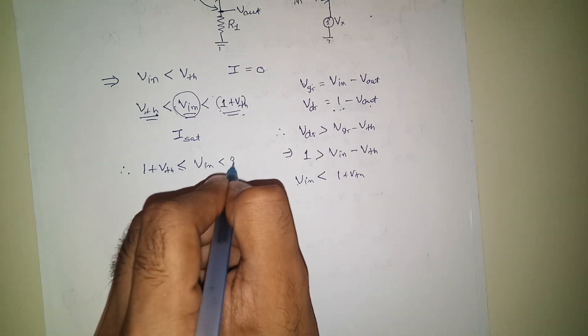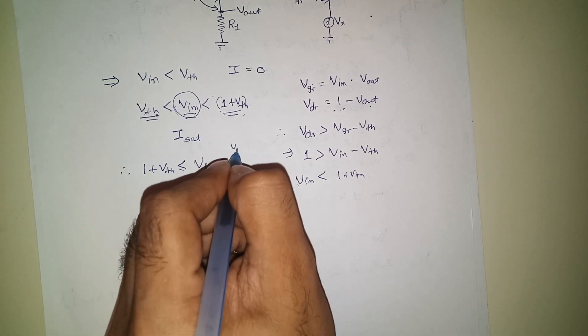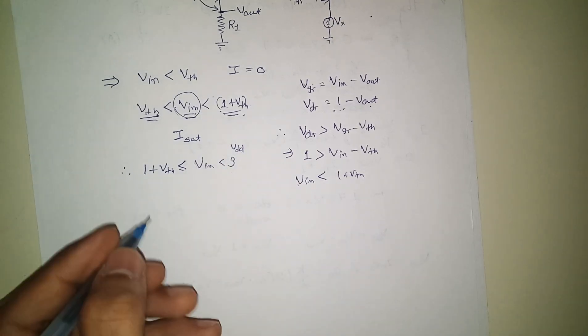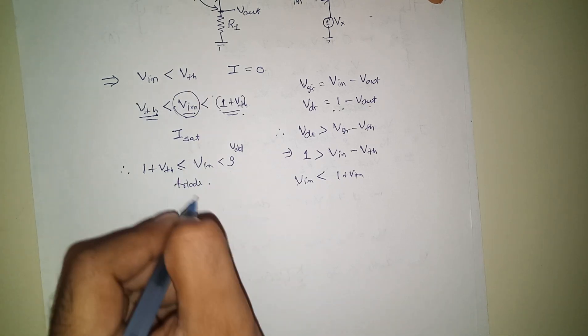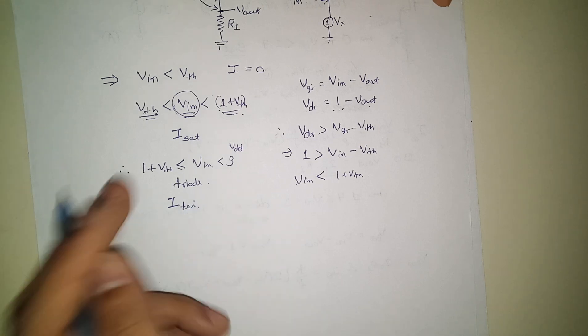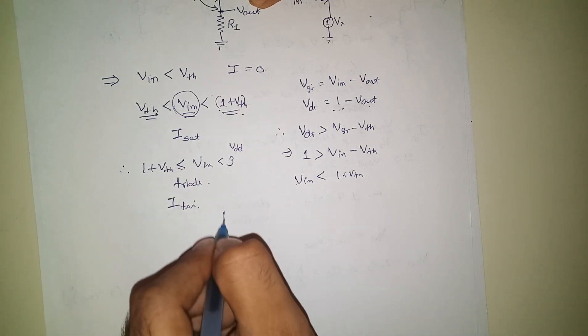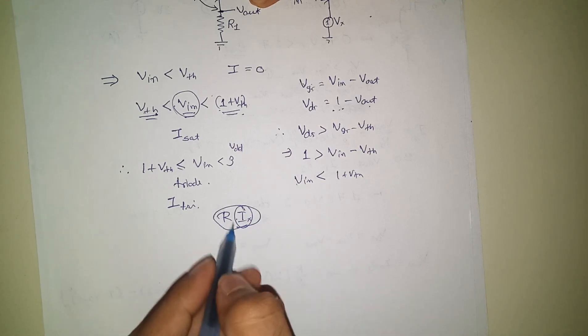Up to 3 volts, it will be in triode. So you need to write the equation of I_triode. And V_out is nothing but R into I_X. So whatever I you are finding, times R will be your V_out.